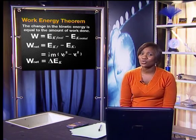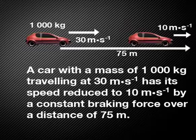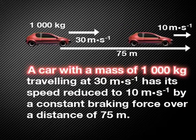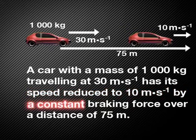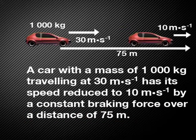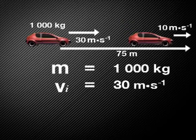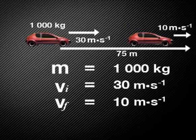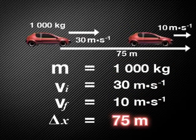I wonder if you can think of a situation when we could apply the work-energy theorem. Have a look at this example: a car with a mass of 1,000 kilograms traveling at 30 meters per second has its speed reduced to 10 meters per second by a constant braking force over a distance of 75 meters. Let's start by extracting the important information given. What we have is the mass, initial and final velocities, and displacement.